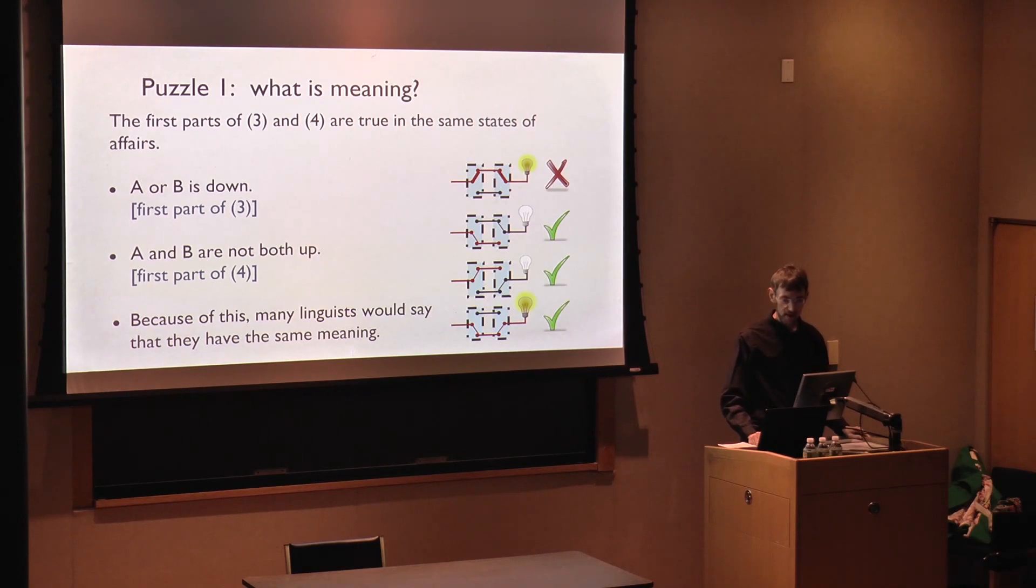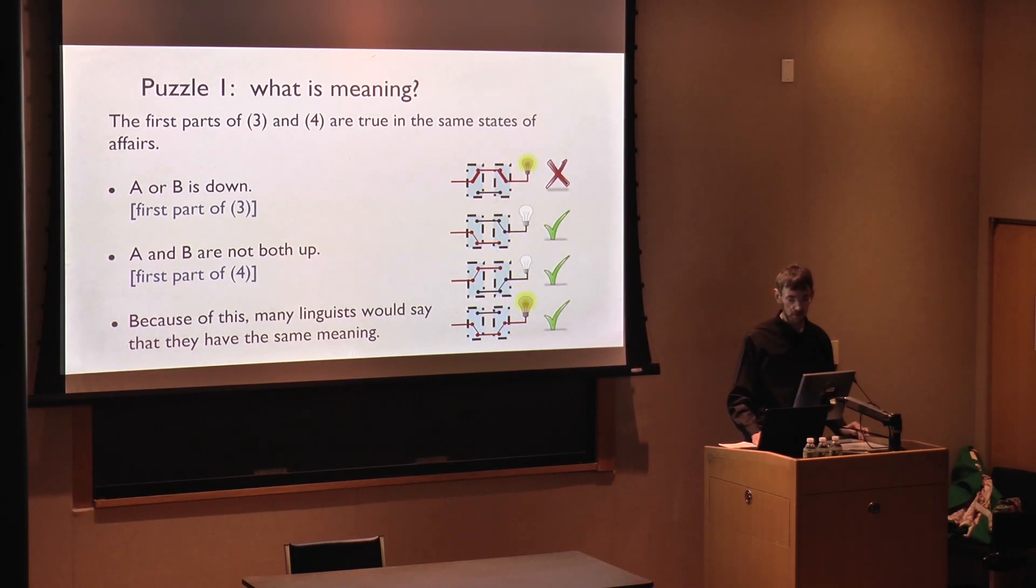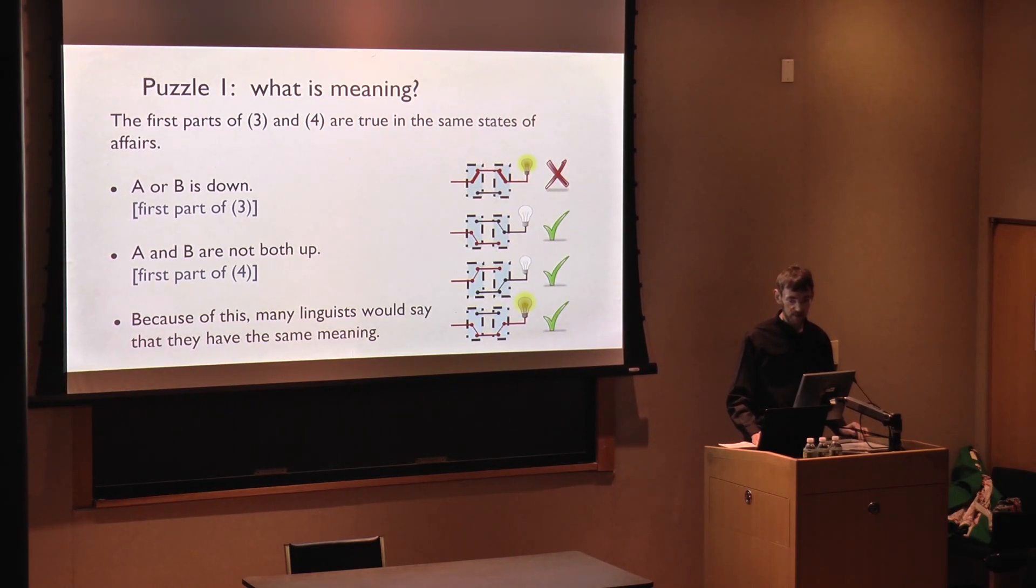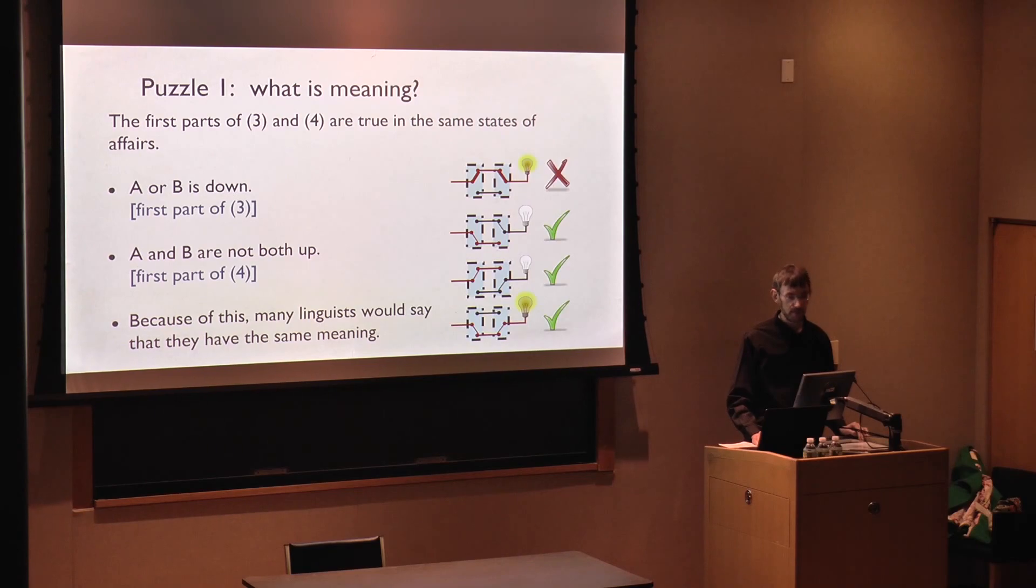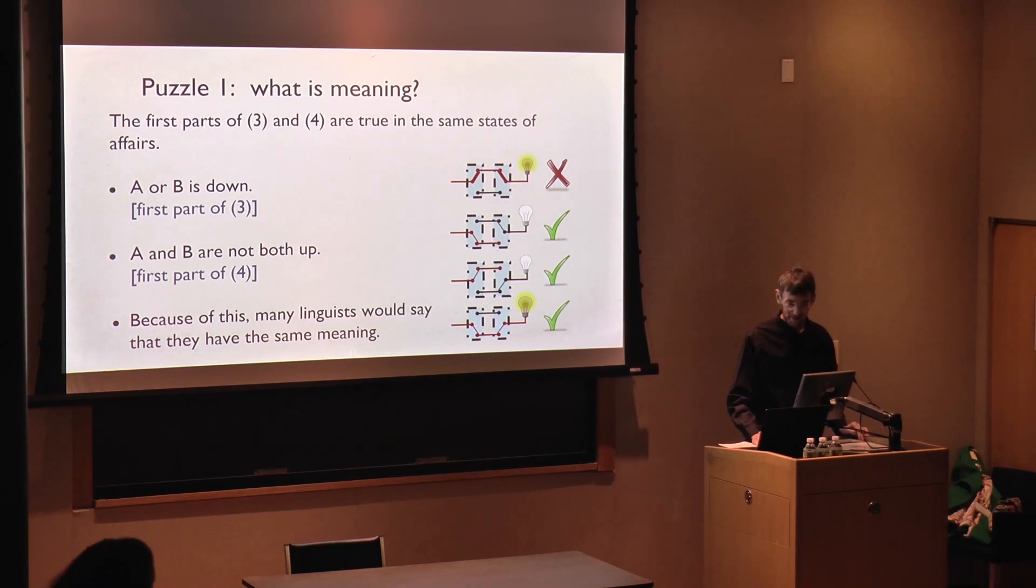Now, if you ask semanticists and philosophers the question, what is meaning? Many of them would say that meaning is determined by what makes sentences true or false. They would also say that when two sentences are true in the same states of affairs, they have the same meaning. In any case, that's what we teach our students. For example, the sentences 'John kicked the ball' and 'the ball was hit by John' have the same meaning because they are true in the same states of affairs.